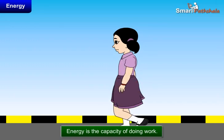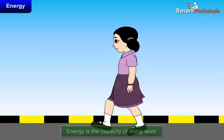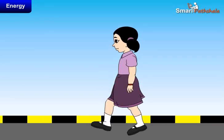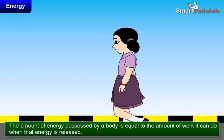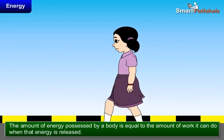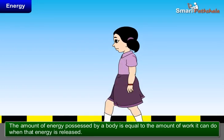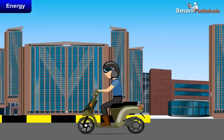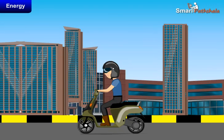Energy is the capacity of doing work. You can also say that the amount of energy possessed by a body is equal to the amount of work it can do when that energy is released. For example, an object which can do more work is said to have more energy, and vice versa.